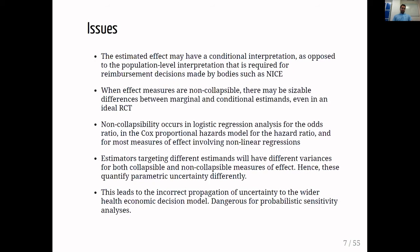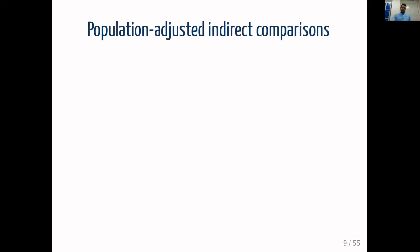The truth is that conflating these measures of effect is not only an issue when the measure of effect is noncollapsible. Also when it is collapsible, estimators that target different estimands will have different variances. This has implications for the propagation of uncertainty to the wider economic model and is dangerous for probabilistic sensitivity analysis. The solution is marginalizing the coefficients of the conditional outcome regression.